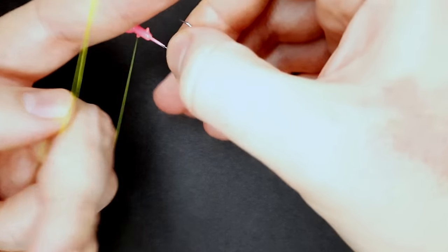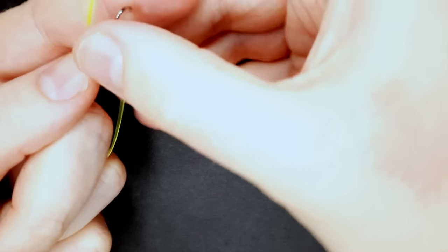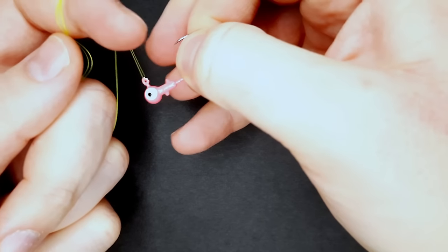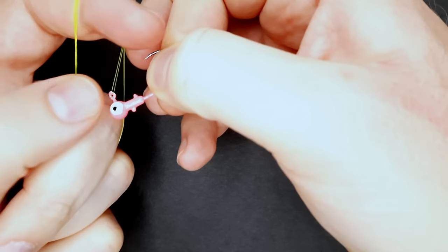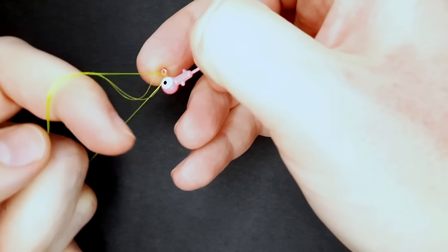There's one, two, three. So on the third one, you want to take the eyelet of the jig and pull on the loop.